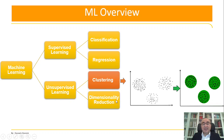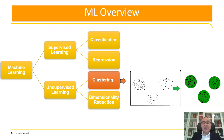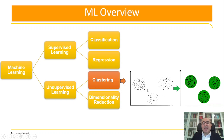Under unsupervised learning we have clustering and dimensionality reduction. In clustering, suppose that we have this group of data, this group, and this group — how can we use machine learning to identify these groups? From sight you can directly identify the green group, another group, and another group. This is what clustering is all about. You might have data with much more complex distribution, so you need machine learning to identify the clusters for your data.